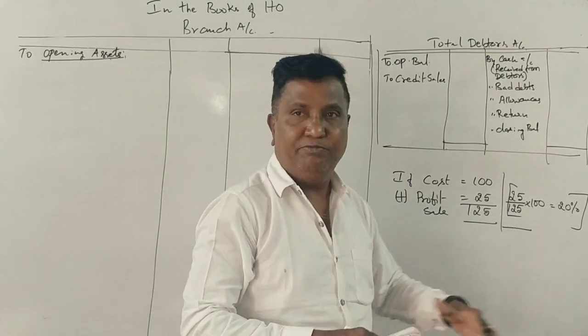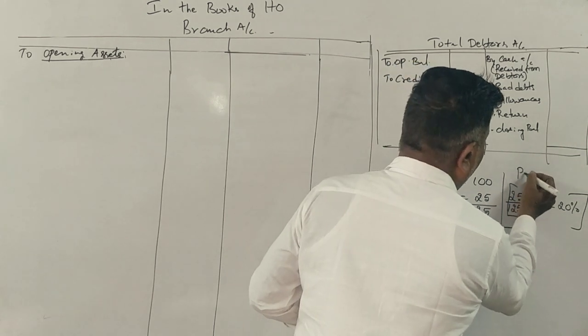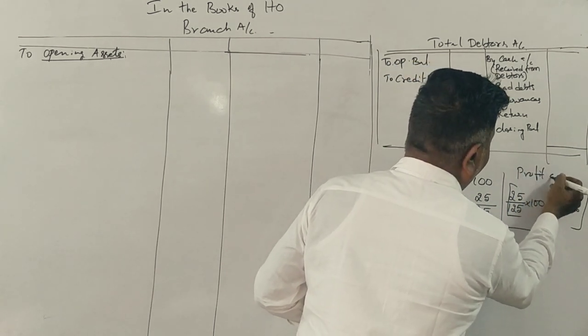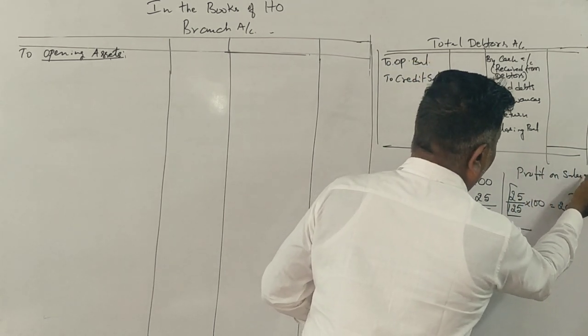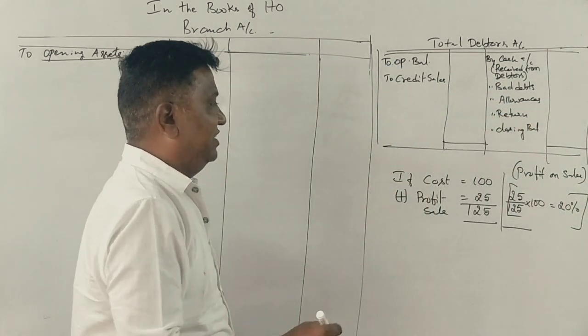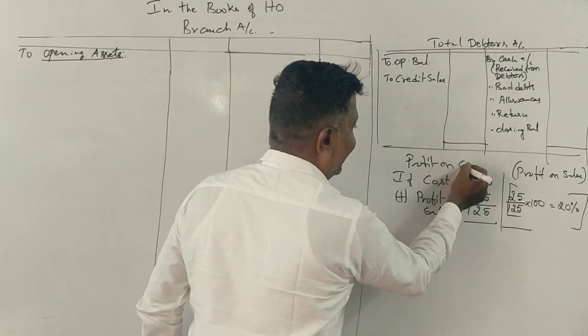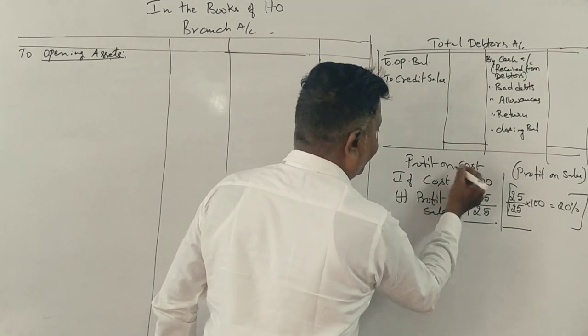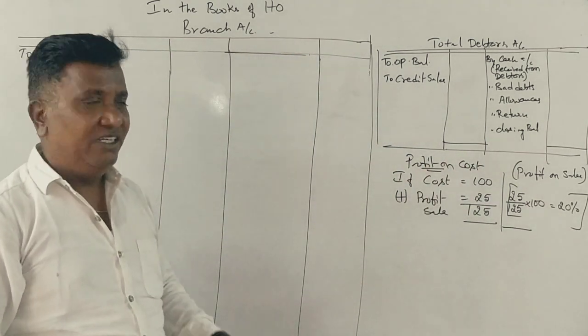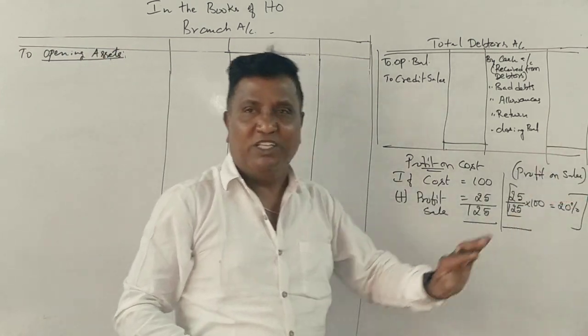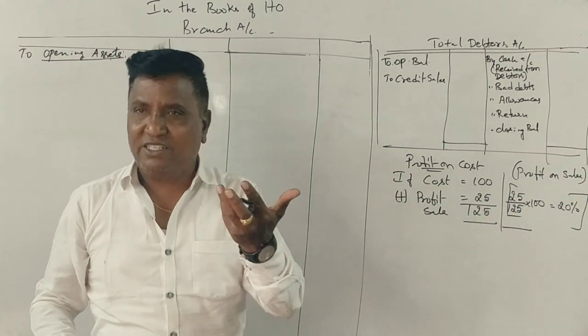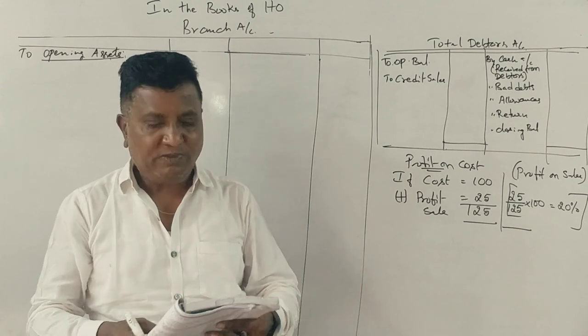This is profit on sales. What is profit on sales? What is profit on cost? Do you understand? Yes or no? Profit on sales and profit on invoice. Question over.